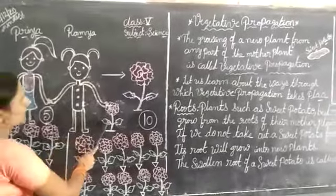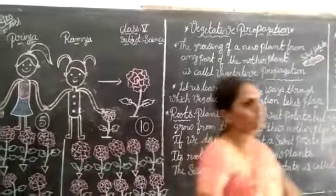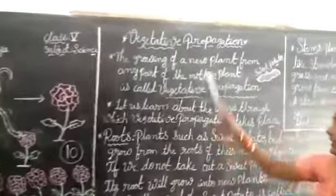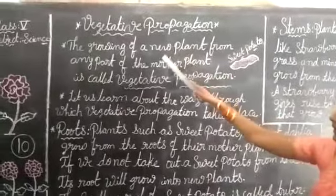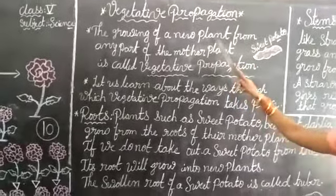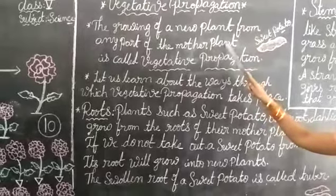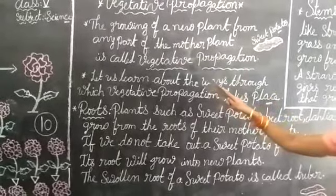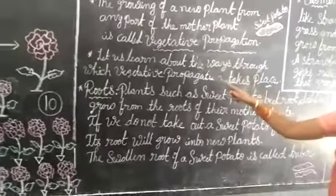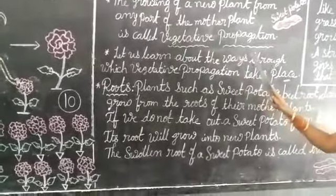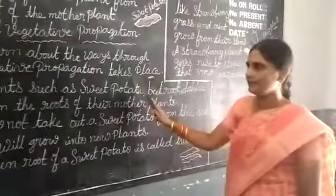Children, what is vegetative propagation? The growing of a new plant from any part of the mother plant is called vegetative propagation. Let us learn about the ways through which vegetative propagation takes place.